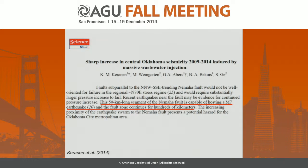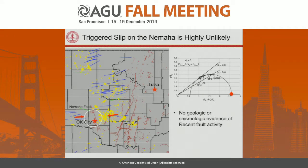However, the Nemaha fault is a dead fault. If we look at the orientation of that fault with respect to the stress field, it's a very steeply dipping fault, and the fault normal is essentially parallel to SH max. You would have to raise the fluid pressure to twice the value of the minimum horizontal stress in order to get that fault to slip. It's physically impossible to do that.